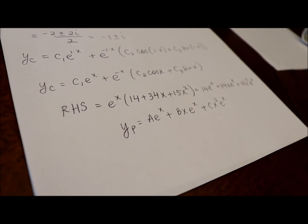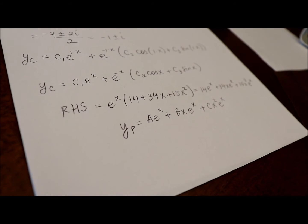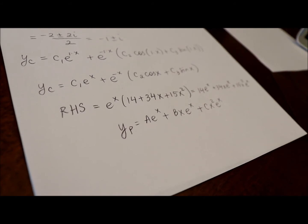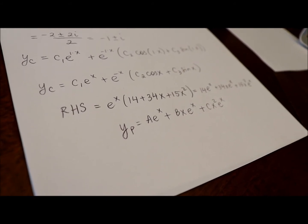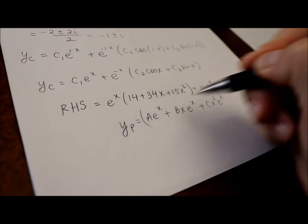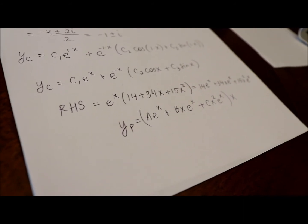you have to multiply all the terms in your particular solution corresponding to that function by the lowest power of x that eliminates that duplication. And that would be everything will have to be multiplied by x.